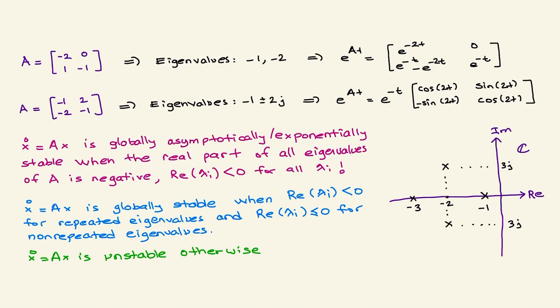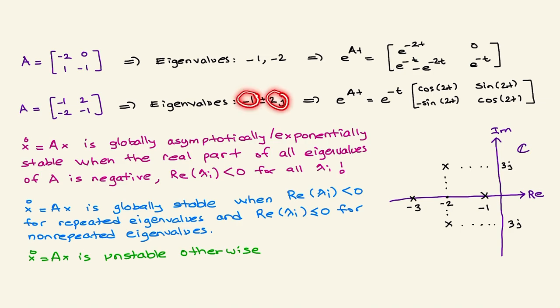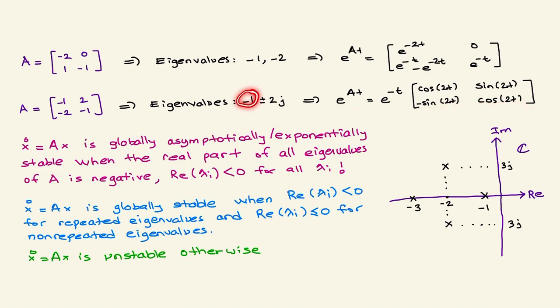For the second example, consider an A matrix with complex eigenvalues — it has real part minus one and an imaginary part. When you compute e^(At) using one of the three methods, you'll observe cosine and sine terms, but the real part of the eigenvalues — e to the power of minus t — pops up once again.